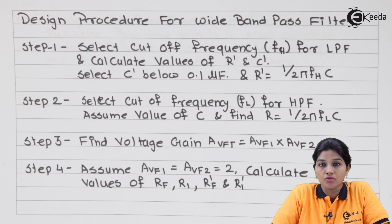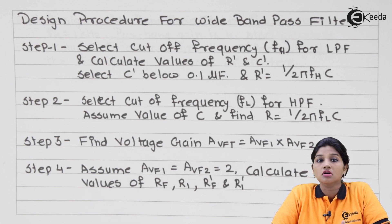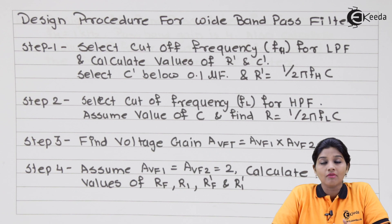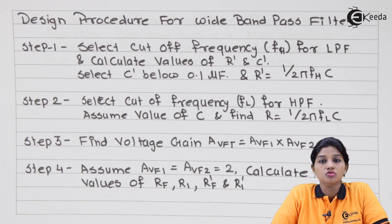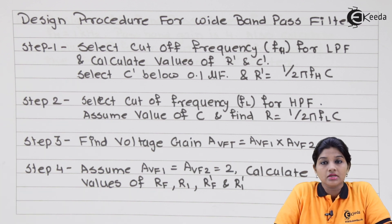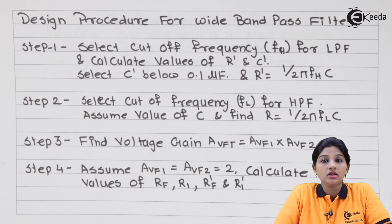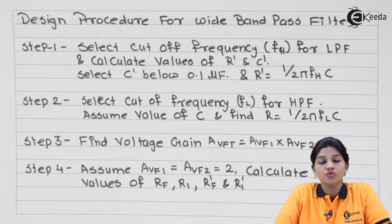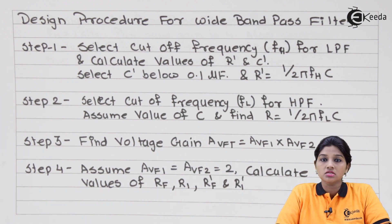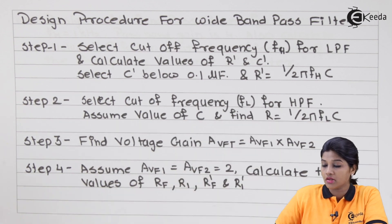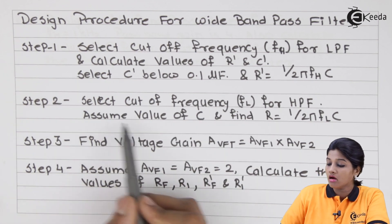If it is a low pass filter, we need to consider the value of higher frequency fh; if it is a high pass filter, we need to consider the value of lower frequency fl. The values of components are differentiated using a dash symbol — so for the low pass filter all components have a dash symbol like C-dash and R-dash. The capacitor value should be less than 0.1 microfarad, and R-dash is calculated as 1 upon (2π × fh × C-dash).